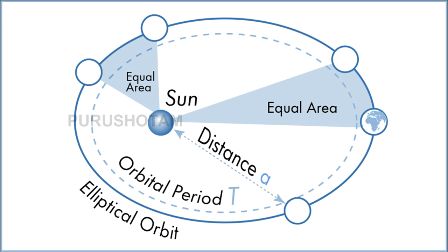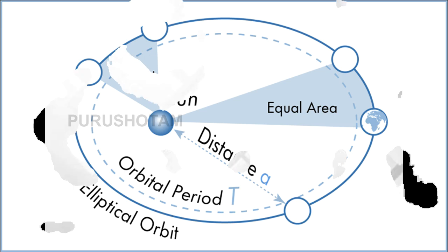But it would take Johannes Kepler, building on work performed by Tycho Brahe and others, to establish a clear scientific foundation for planets' movements. Kepler's three laws of planetary motion, formed in the early 17th century, describe how planets orbit the Sun.